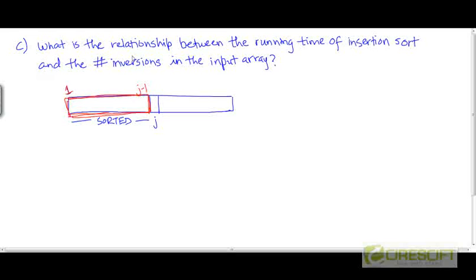This is the third part of the question from Korman. What is the relationship between the running time of insertion sort and the number of inversions in the input array? Let's assume that our input array A has n elements, so the indices vary from 1 to n.